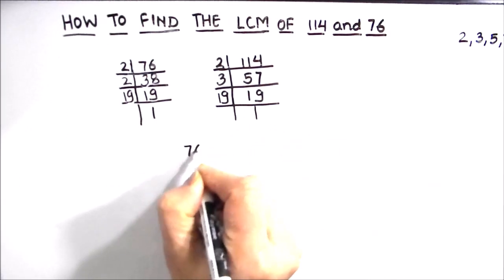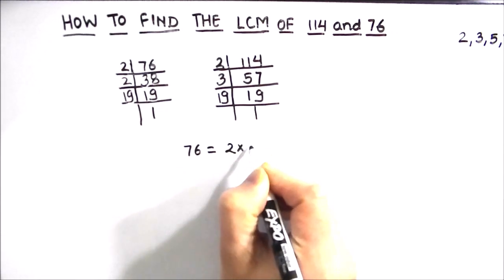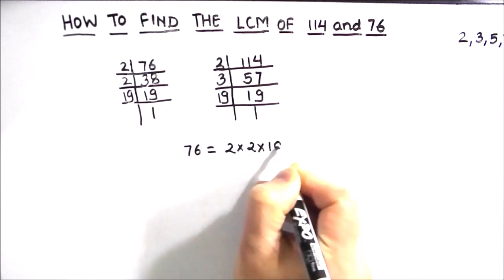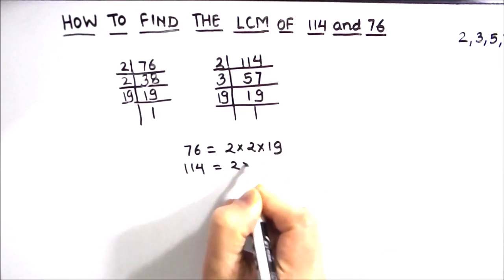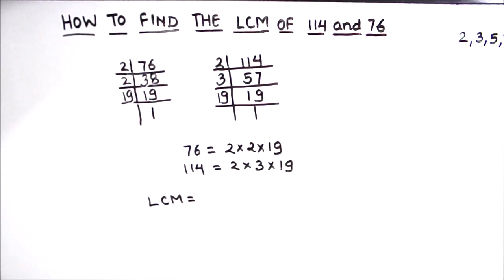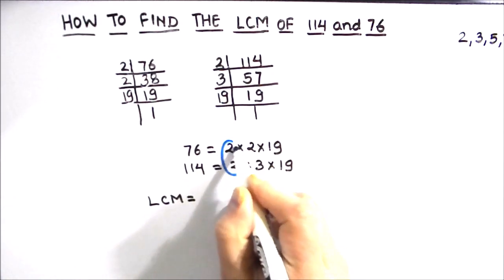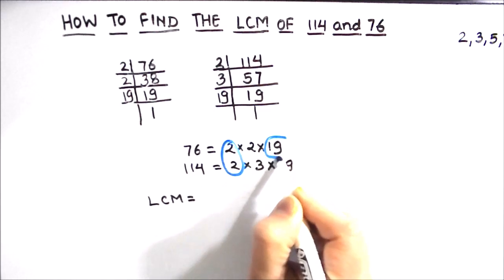So now we can write the numbers as the product of their prime factors as 2 times 2 times 19 and 2 times 3 times 19. Now to find the LCM of the two numbers, we are first going to find the common factors between the two numbers. So the common factors between the two numbers is number 2 and number 19.